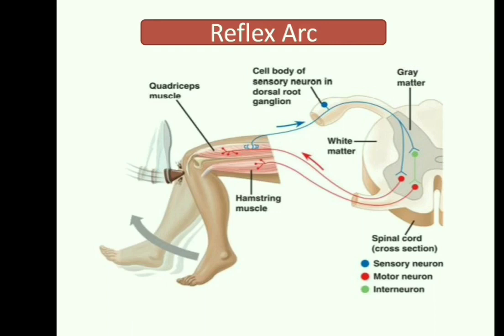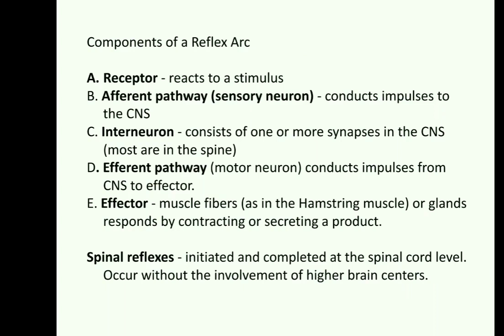The reflex arc is an important and often skipped topic. The components of the reflex arc are: a receptor which reacts to its stimulus; the afferent pathway via sensory neurons, which conducts impulses to the central nervous system; interneurons with one or more synapses in the CNS; the efferent pathway via motor neurons; and effectors, which are basically muscle fibers. These components together make up the reflex arc.